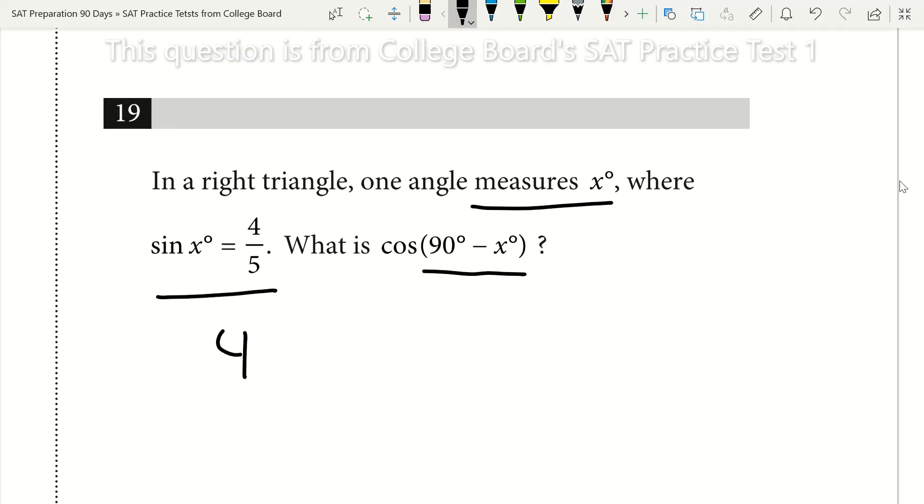Well, the answer is also going to be 4 fifths. So how did I answer that in less than a second? Anytime I'm told that the sine of angle x is 4 fifths, and then I'm told that the cosine of angle 90 minus x is equal to something, it has to be the same. The sine of angle x must equal the cosine of angle 90 minus x.